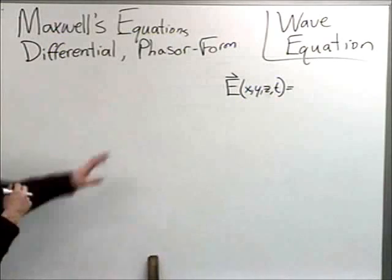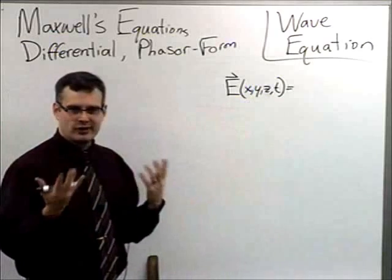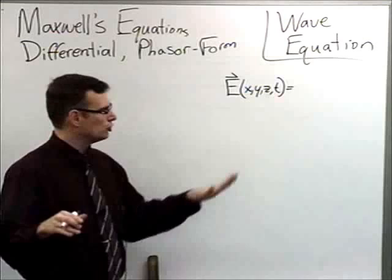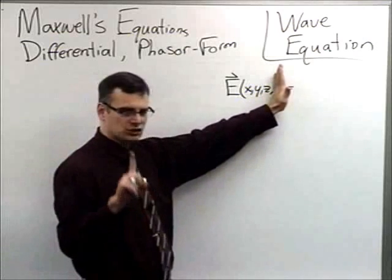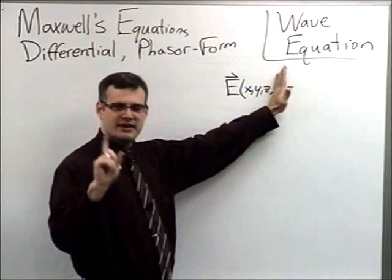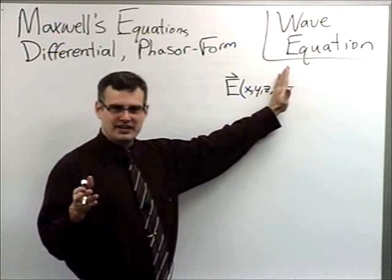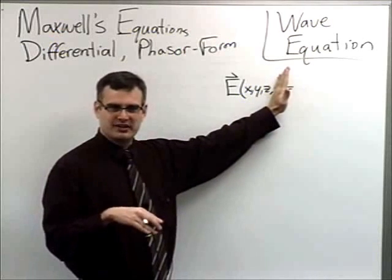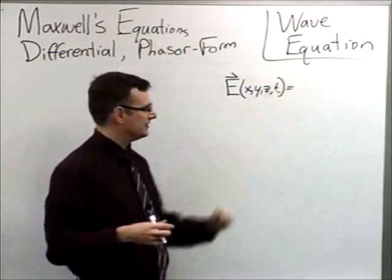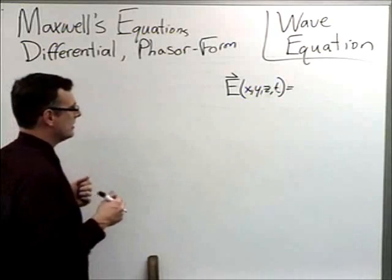We're going to have an electric field as a function of space and time. Like all time harmonic systems, we're going to use the phasor domain to remove the time dependence so we only have to worry about space. That greatly simplifies the equations — differential operators become multiplication and much easier operations.